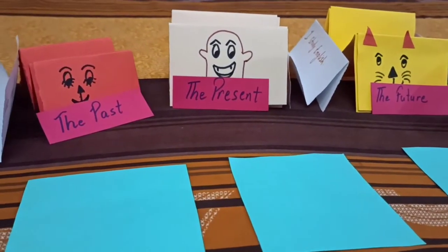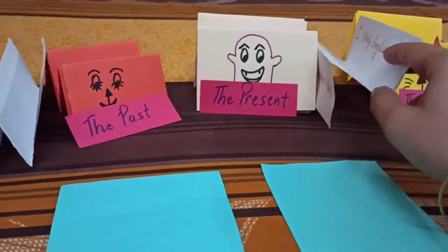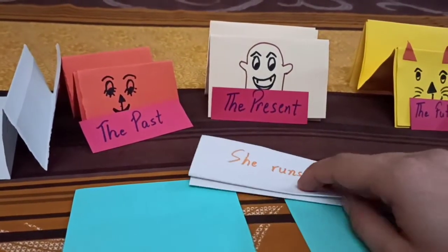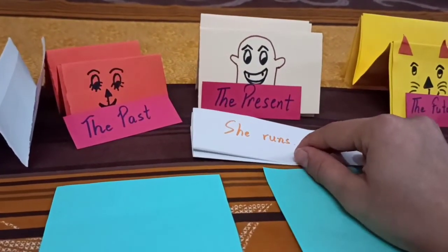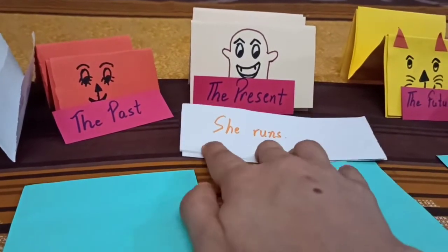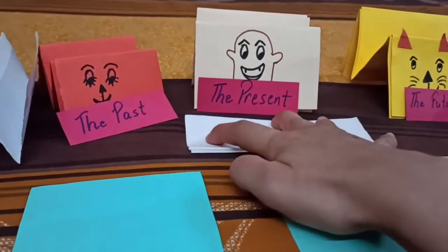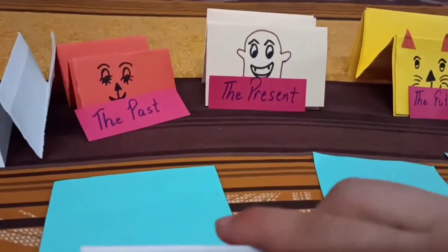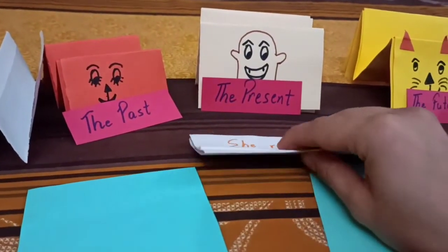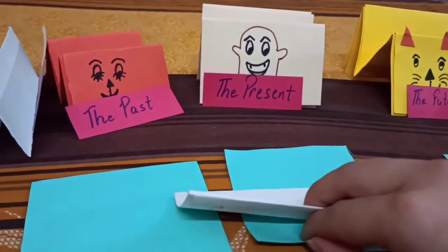Now the present says: what do I talk about? The present says, I talk about an action which is going on right now. I talk about an action which doesn't change — an action which is a part of your daily routine. And I use the first form of the verb.